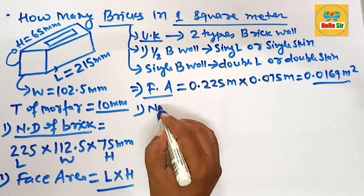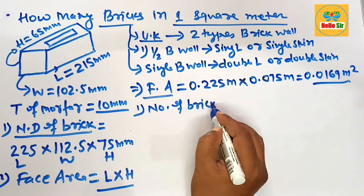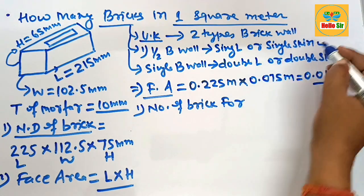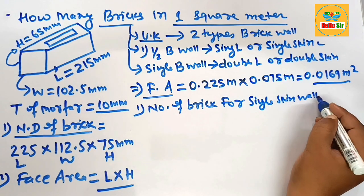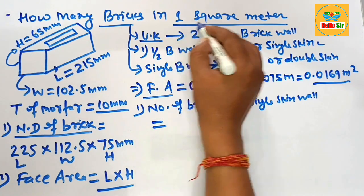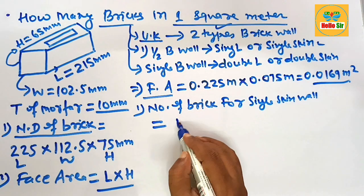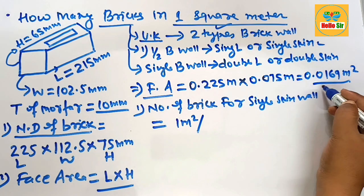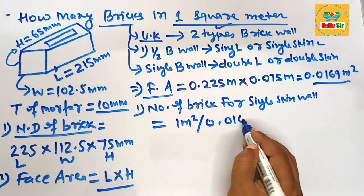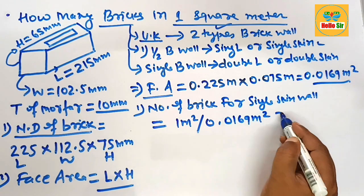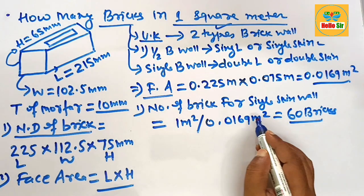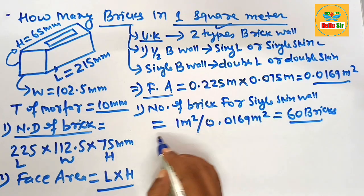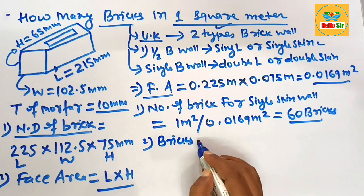Now calculate the number of bricks for a single skin wall. The formula is: brickwork area divided by the area of one brick. Taking one square meter divided by 0.0169 square meters gives approximately 60 bricks. So you need 60 bricks per square meter for a single skin wall.